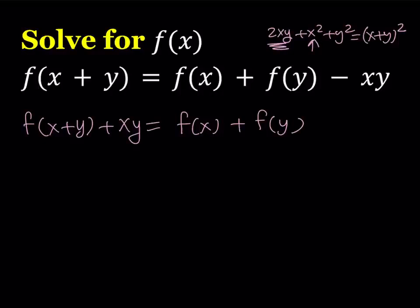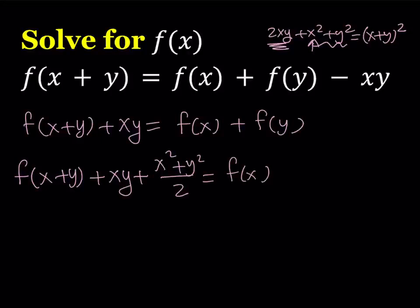Great, so since I don't have 2xy, I have xy, I need to add half of this. So this is how it goes. I'll be adding half of x² + y² to both sides. Of course I have to do the same thing on the right hand side.